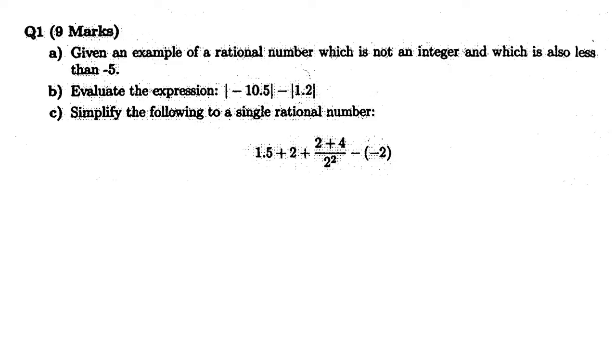The first question is to give an example of a rational number which is not an integer and which is also less than negative 5. First of all, what is a rational number? Well, it's basically just a fraction. So when they say rational number, you should think of that as a fraction a over b. a and b are integers, and the bottom integer is not allowed to be zero.